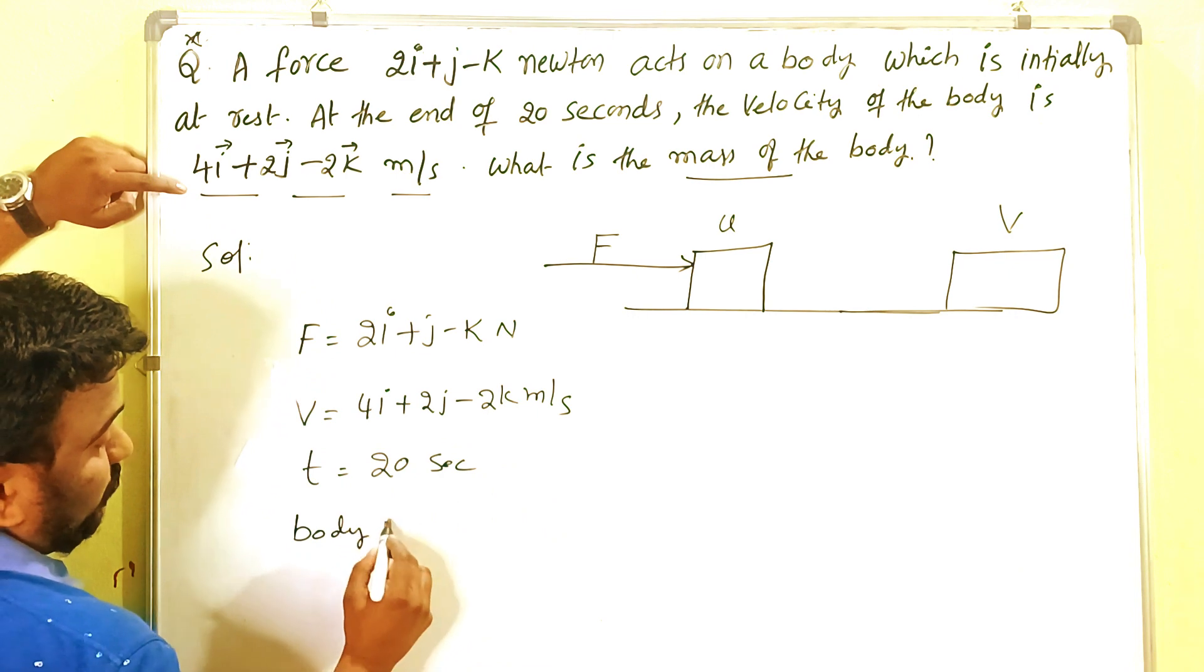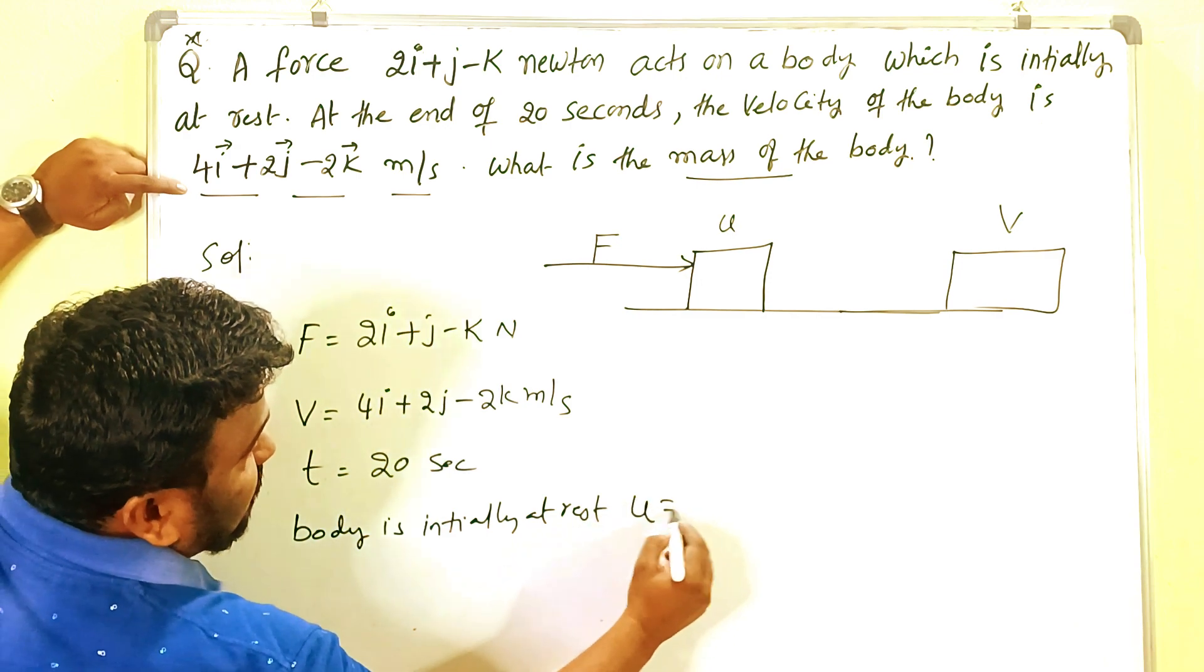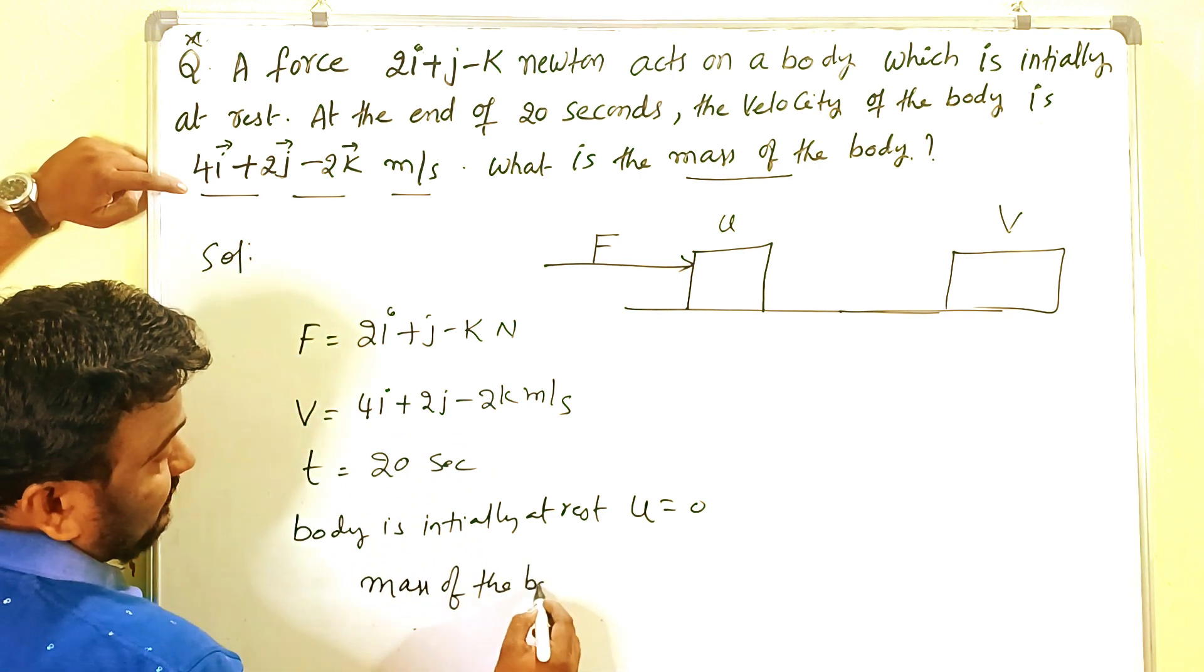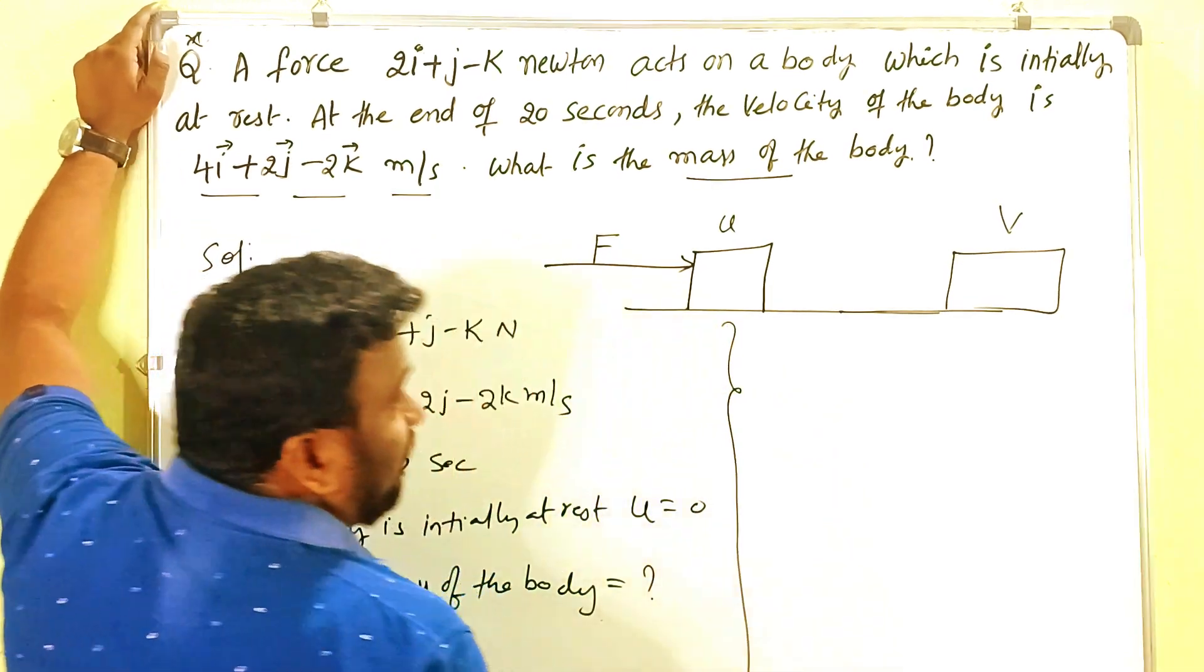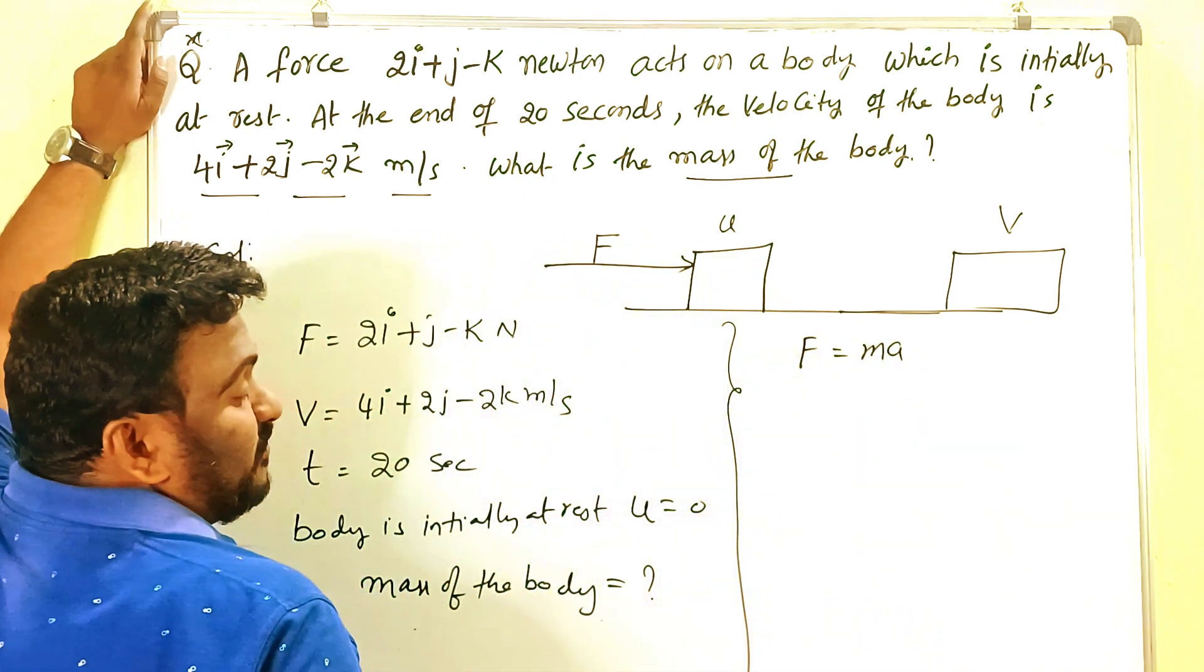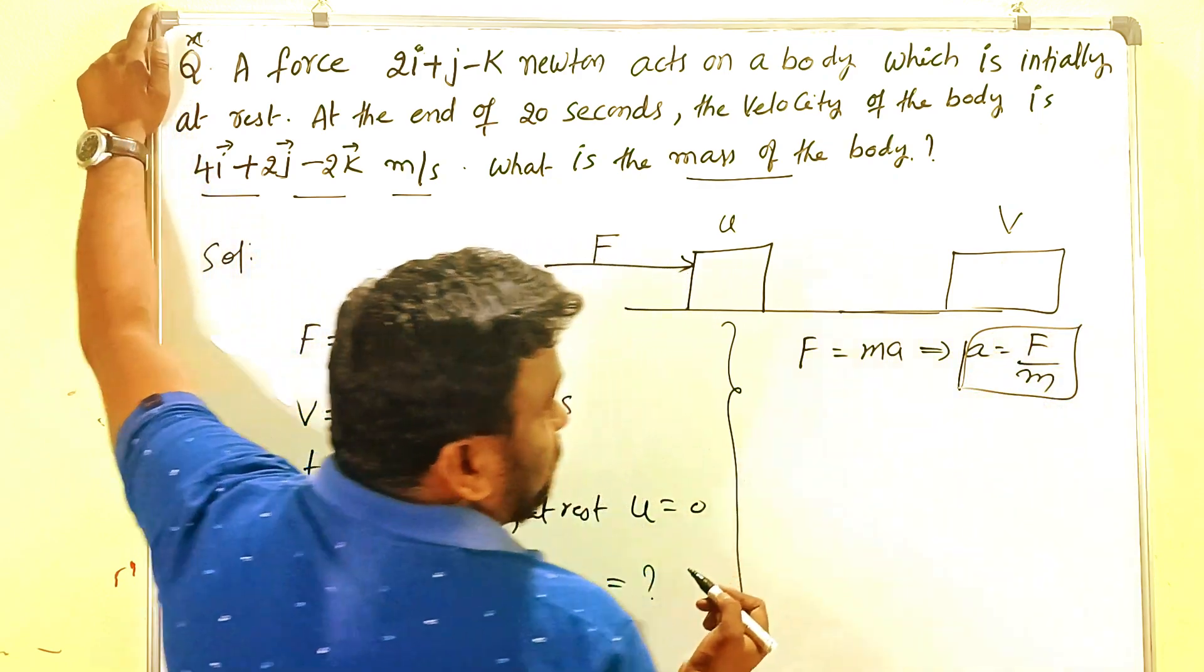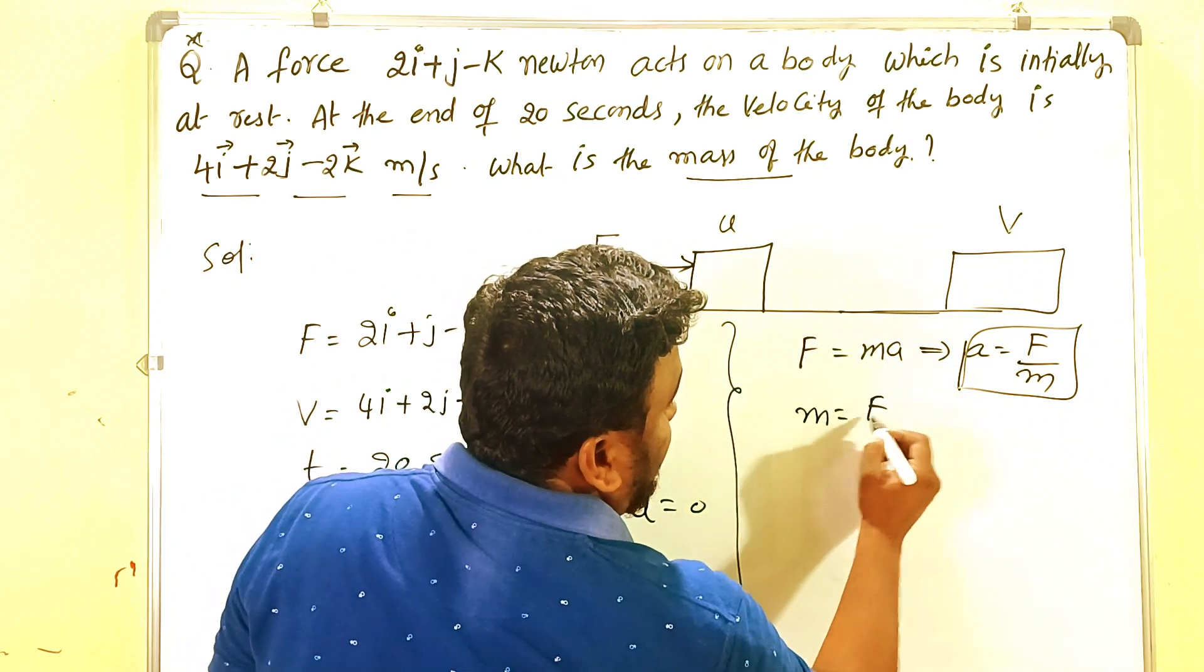The body is initially at rest, so the initial velocity is zero. Now what we have to find out is the mass of the body. We already have one formula: F equals M A. From that, A equals F by M. Or, we have to find out M, so M equals F by A.